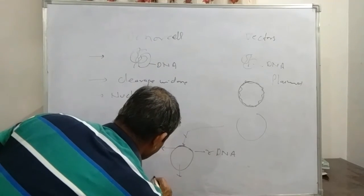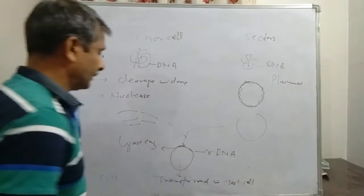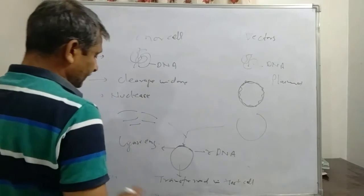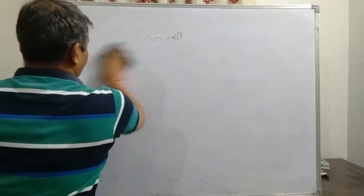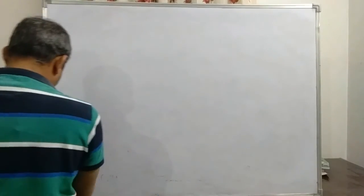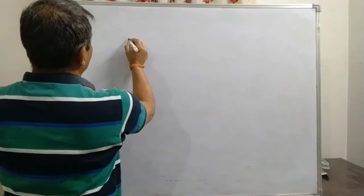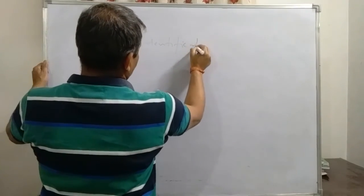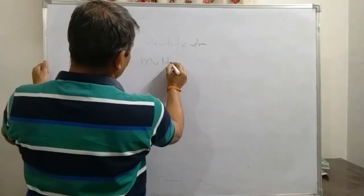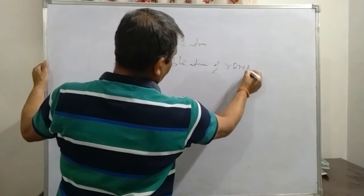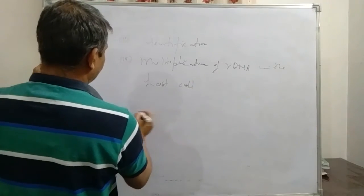Now this DNA is transferred in the host cell for further development. And after the transfer in the host cell, this is identified whether the RDNA is expressing the characters or the features for that purpose we have selected it. And if we find it suitable, then we go for the multiplication of the RDNA in the host cell.